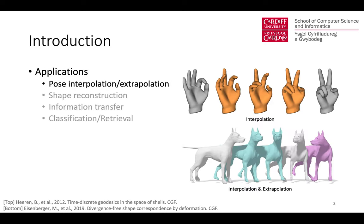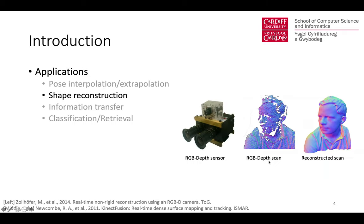Shape correspondence has many applications. For example, given two shapes — source and target — if we know the correspondences, we can use that for shape interpolation or extrapolation. For shape reconstruction, when we use an RGBD sensor, every time we can only capture one view, and to produce a complete reconstruction we need multiple views, and to fuse them we need their correspondences.